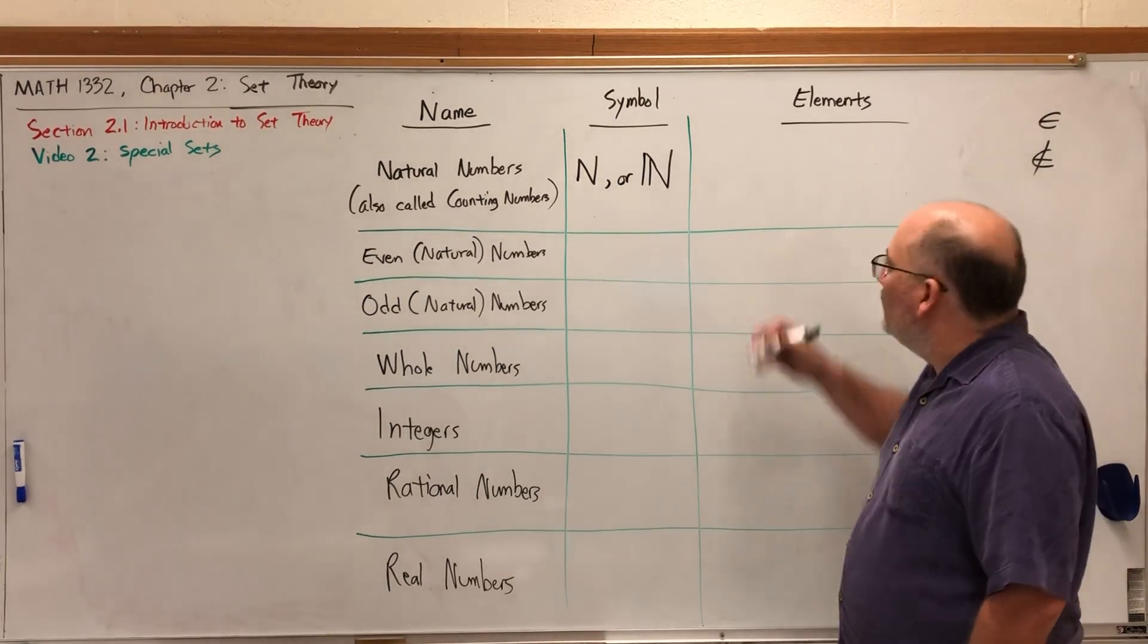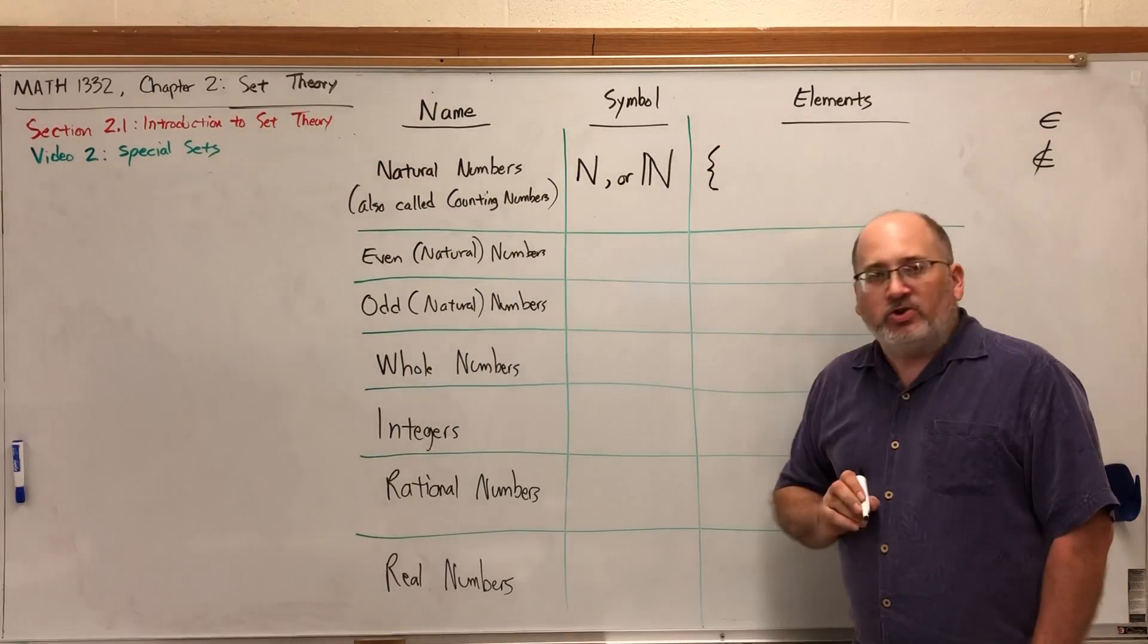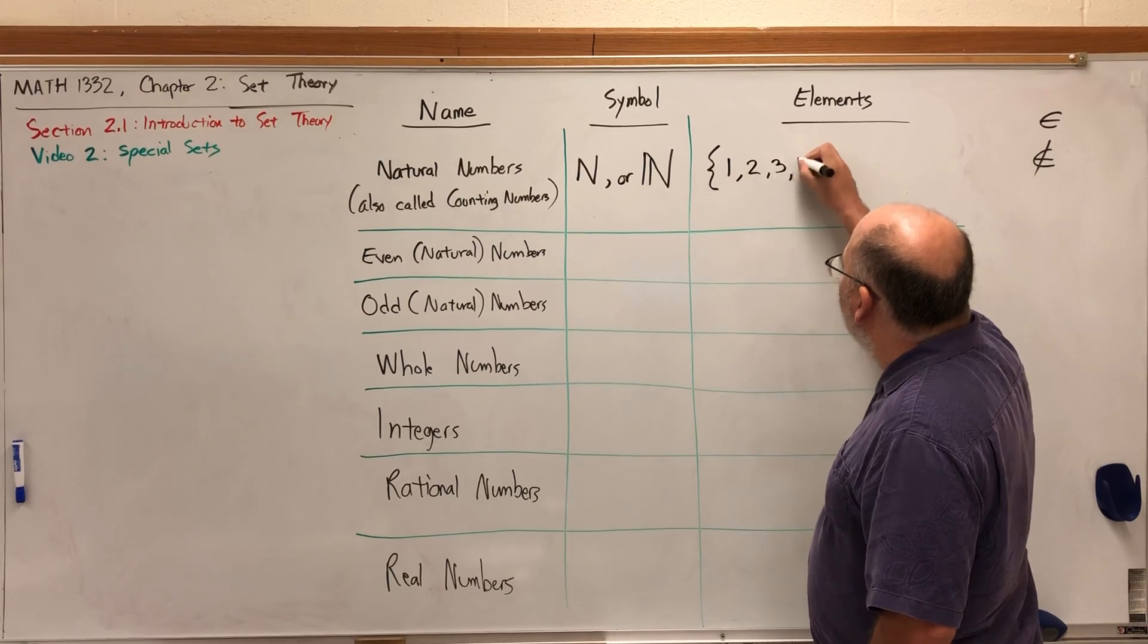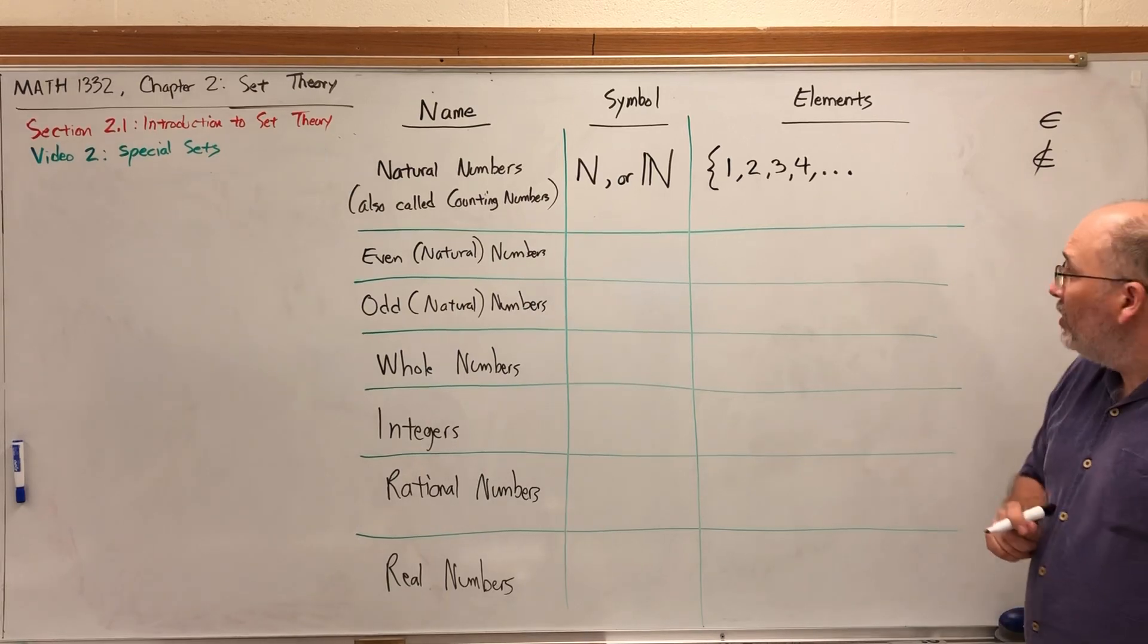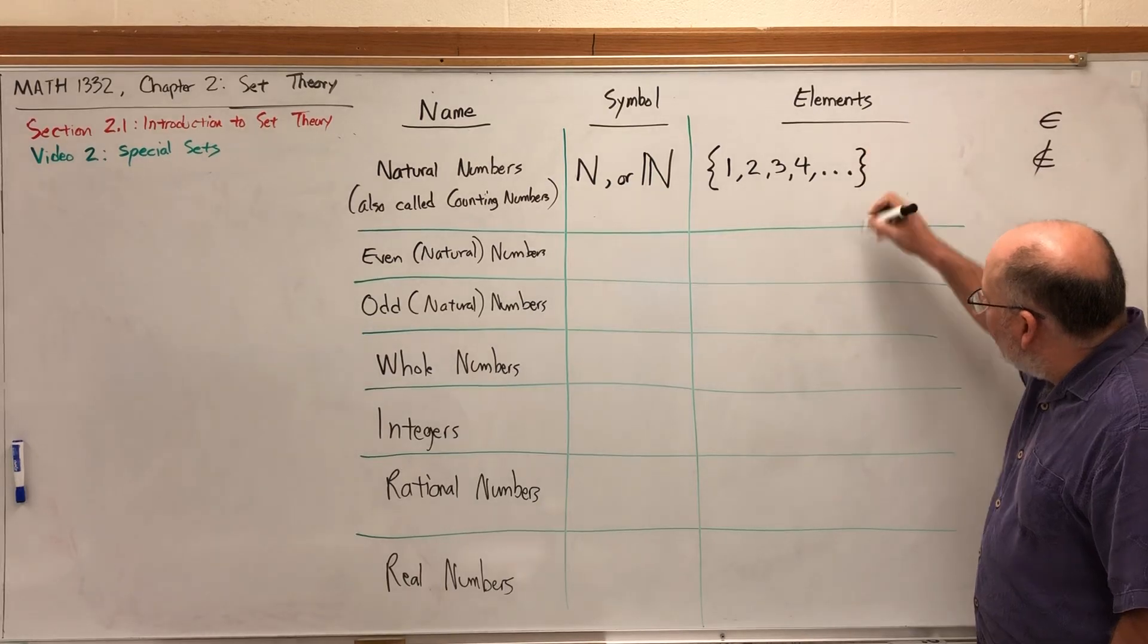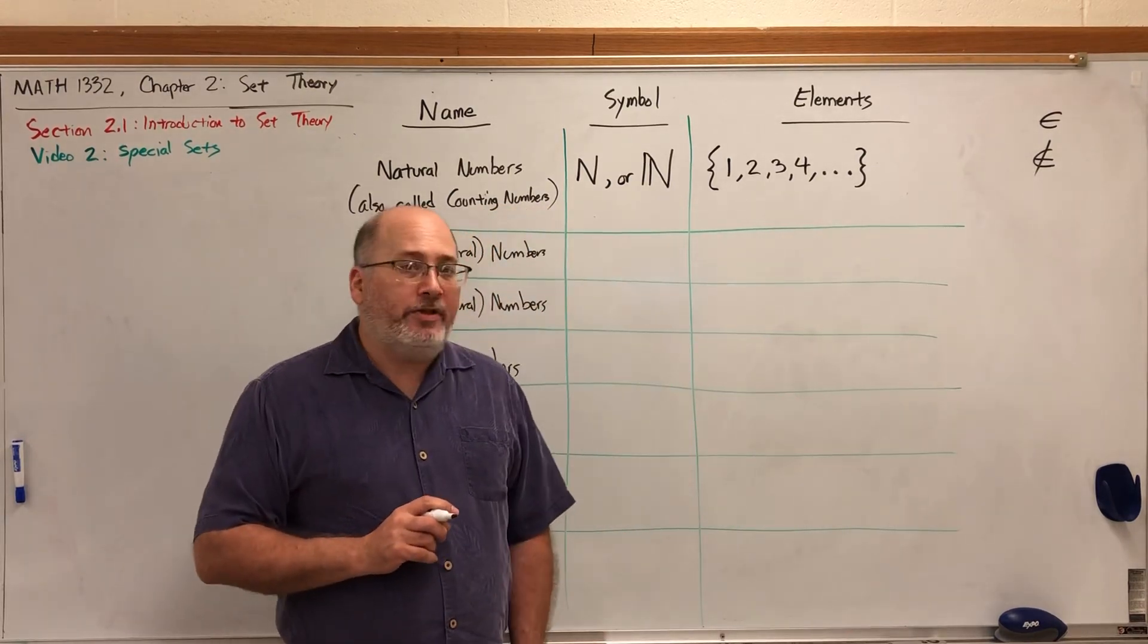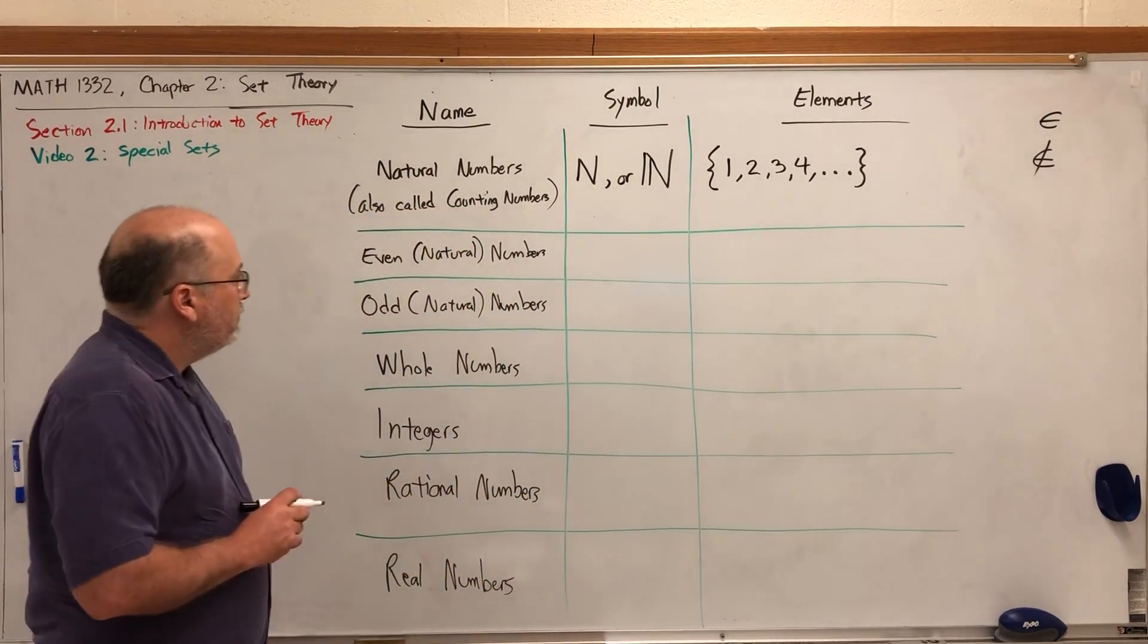The natural numbers, or the counting numbers, are the numbers you would say if you started counting. One, two, three, four, with ellipses because these will continue forever. So your natural numbers are the numbers you count with: one, two, three, four, as far as you can go.